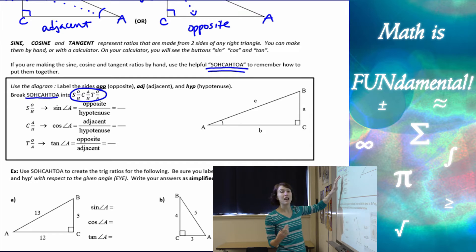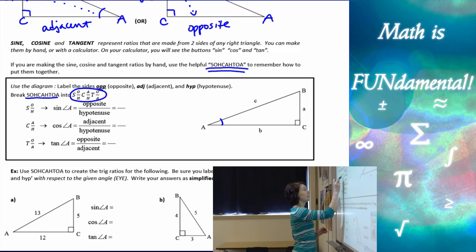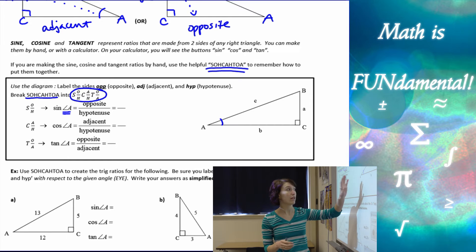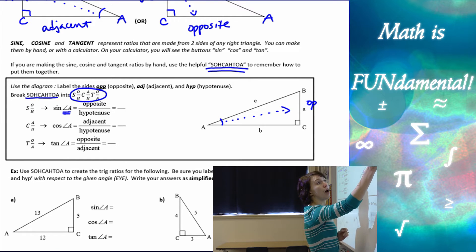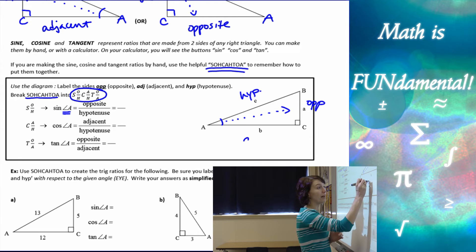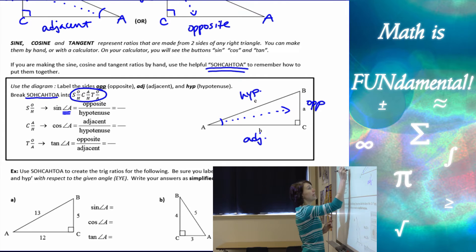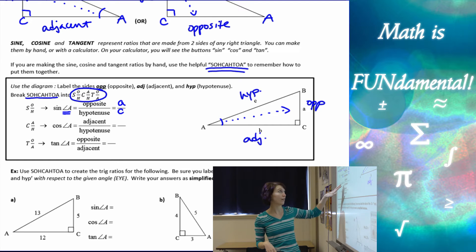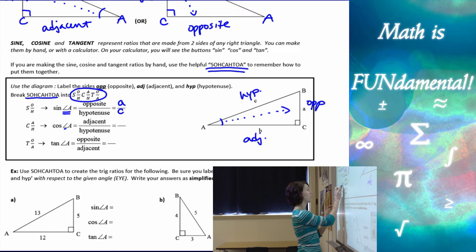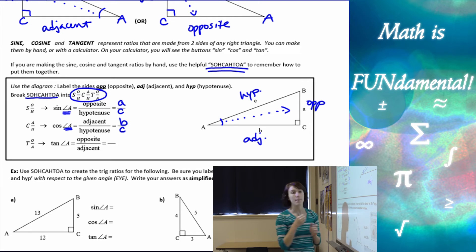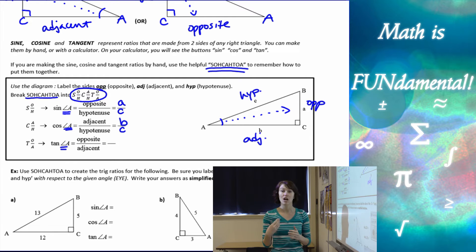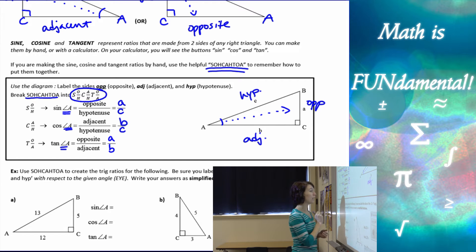Breaking up SOHCAHTOA: SOH means the sine of whichever angle equals opposite over hypotenuse. So sine of angle A — that's your reference angle — gives opposite over hypotenuse, which is A over C. CAH means cosine is adjacent over hypotenuse, so cosine of angle A is B over C. And TOA means tangent is opposite over adjacent, so tangent of angle A is A over B.